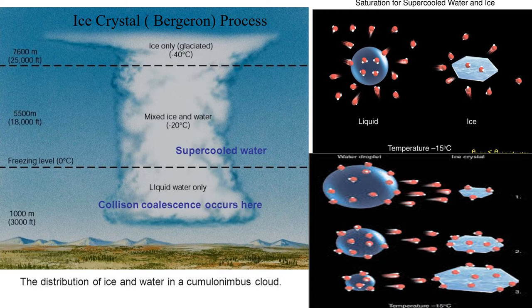But they are still outnumbered by the water droplets. The distribution of ice crystals is not uniform — the downdraft contains more ice than the updraft.